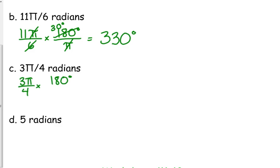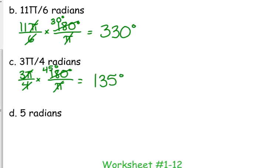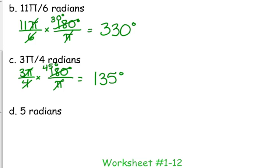For 3π over 4, after canceling the pi's, 4 goes into 180 forty-five times. Then 3 times 45 is 135 degrees. Now for the last one — notice it doesn't have a pi. If it doesn't have a pi, don't add a pi to it.